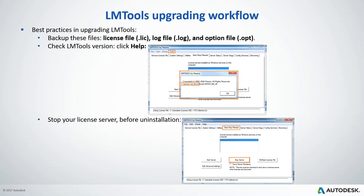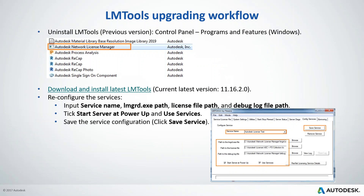After the version check, start your upgrading workflow. Make sure you have stopped the license server and inform your users about the short downtime during the upgrade. Once the server is stopped successfully, uninstall the previous version of LMTools by going to Control Panel under Programs and Features, finding Autodesk Network License Manager, and uninstalling it.